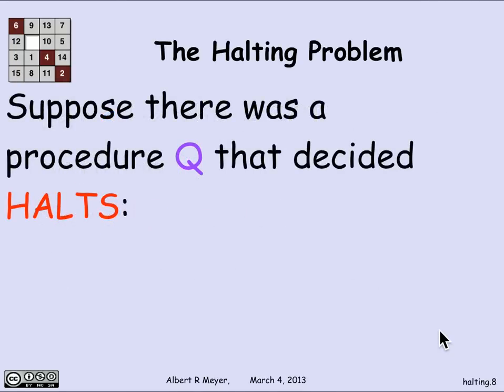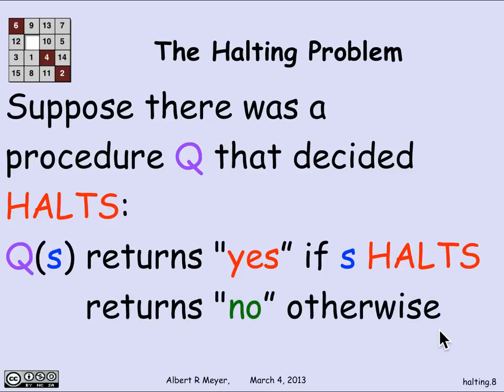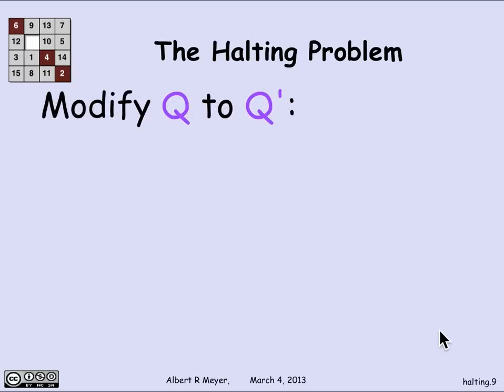What I want to argue is that it's impossible that there could be a procedure q that decides the property 'halts' of strings. That is, q applied to a string returns 'yes' if s does return successfully — if s halts — and returns 'no' otherwise. q applied to s says 'no' if s runs forever, has a type error, or does anything other than successfully return a value. Let's suppose, for the sake of contradiction, that there was this halts decider. Let's assume there was one.